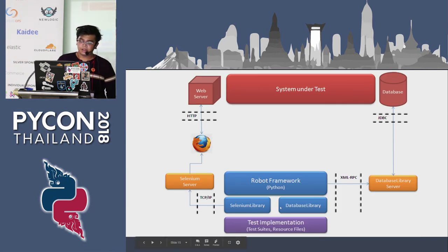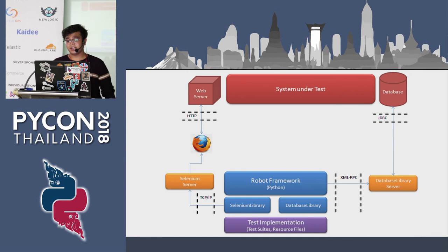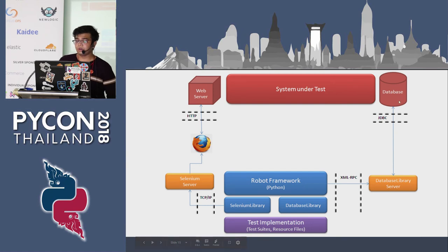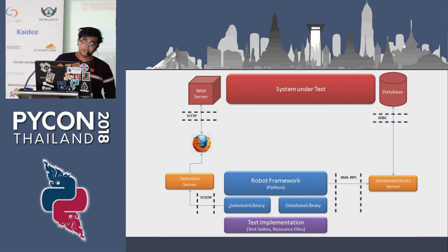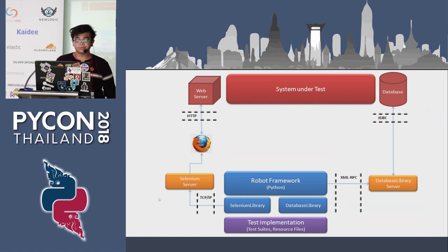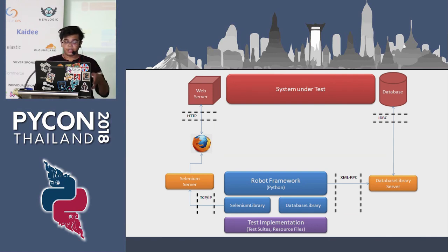Here you have the Selenium library, database library — it has a lot of libraries. If you want to test the database, it makes a remote procedural call to the database to insert a value, check if a table exists, or check if the database responds. If it's the Selenium library, it makes a TCP/IP connection using the Selenium server, connects to the web server using HTTP, creates an isolated environment in the browser, and tests your app.